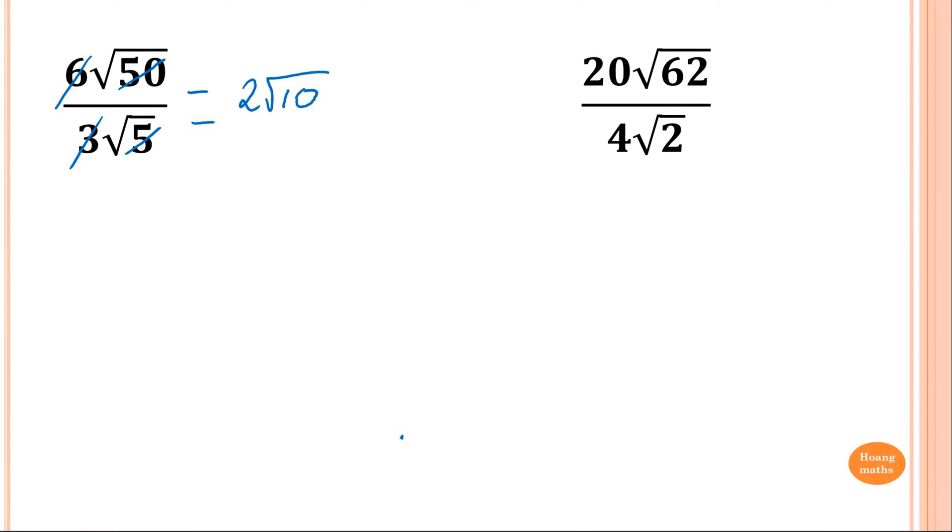This one here. Same rule applies. So 20 divided by 4 is 5. So now 62, just go 62 over 2. 6 goes into 2 three times, 2 goes into 6 three times, 2 goes into 1, 2 goes into 2 is 1. So 31. So 5 square root of 31.